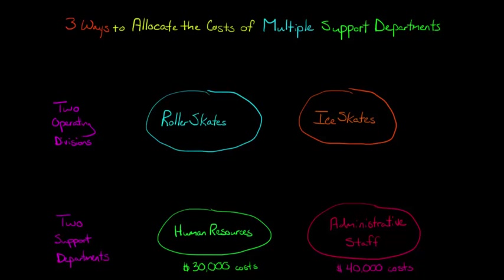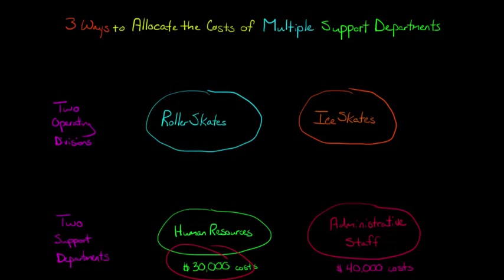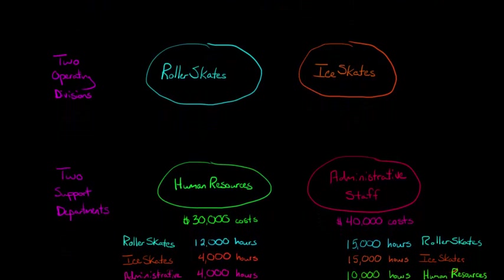Here's the catch: the HR department and the admin staff departments provide services to each other, as well as providing services to the operating divisions. So the question is, how do we allocate the $30,000 in HR costs and the $40,000 in admin staff costs, and how do we account for the fact that they help each other? There are three different ways to do that, and the easiest way is called the direct method.